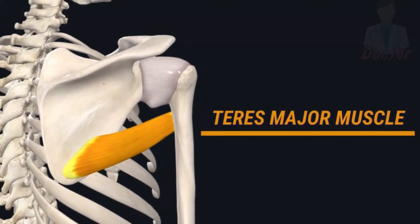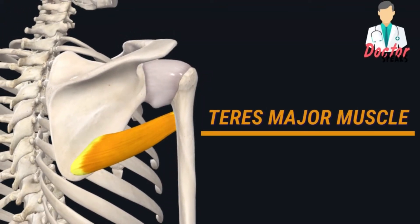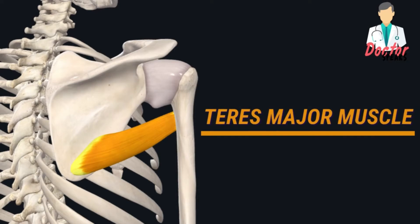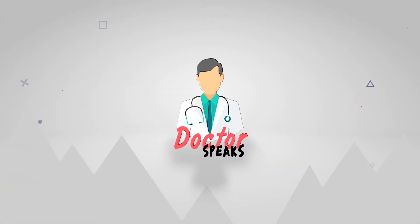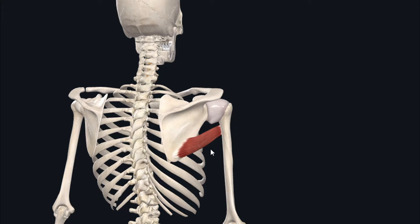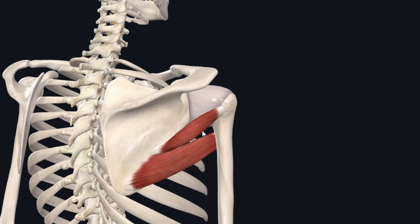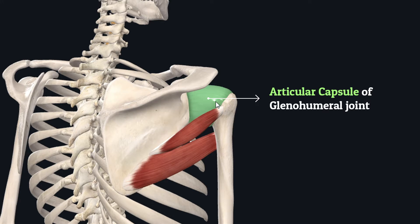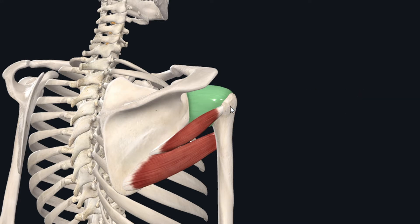Hello viewers, welcome back. Today we will study the anatomy of the teres major muscle. The teres major is this muscle on the posterolateral aspect of the scapula, and it is one of several muscles that connect the scapula to the humerus. Unlike the teres minor, the teres major does not insert onto the capsule of the glenohumeral joint, and so it is not a muscle of the rotator cuff.